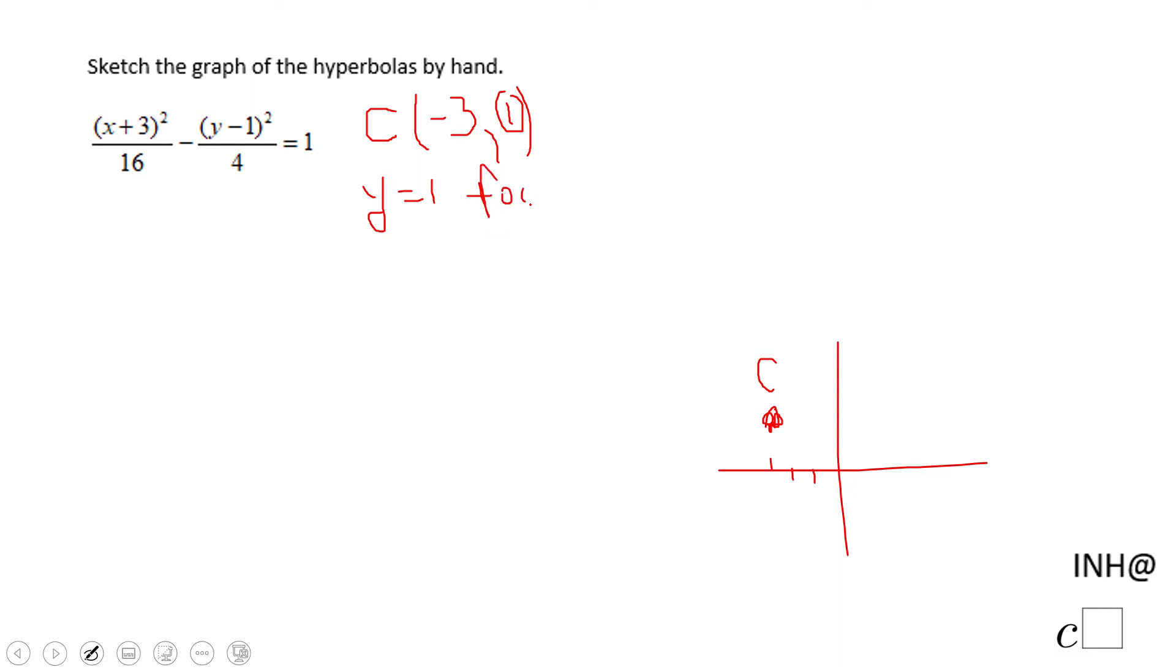On this line, on this dashed line, we have the foci. So how do we find the foci? Now we're going to look at this 16, which is a squared, and we're going to need to find a, which is going to be plus or minus square root of 16.